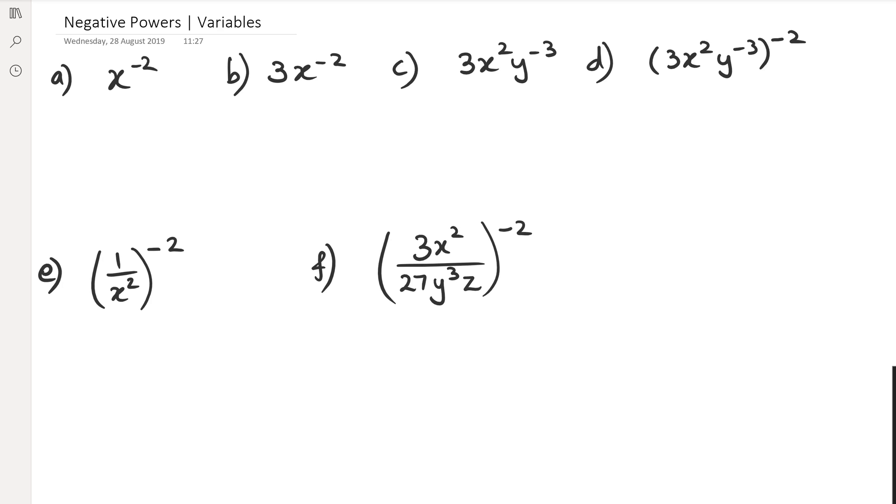In the previous example, we said that if you have a to the power of negative m, then this could be written as 1 over a to the power of m.